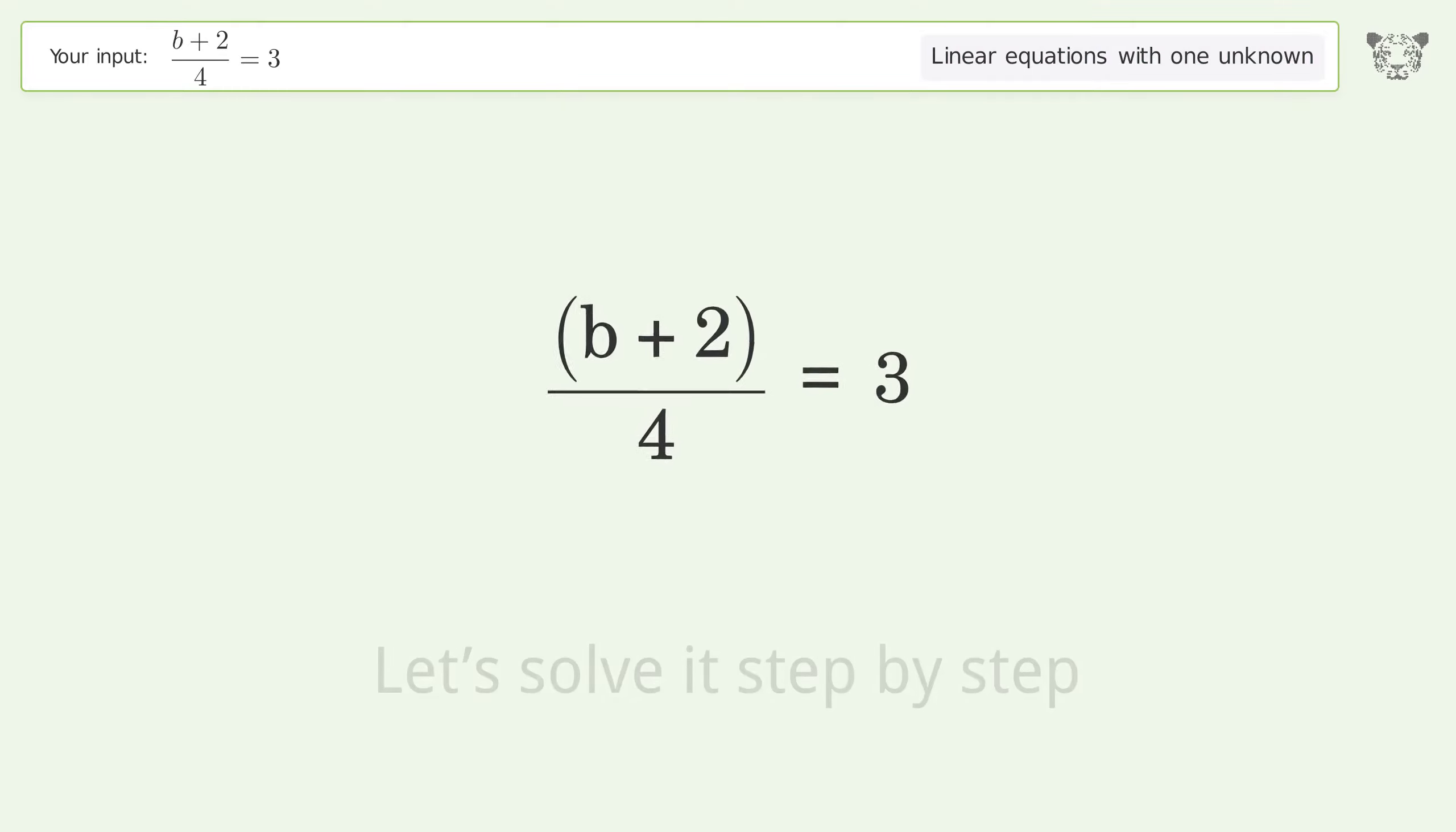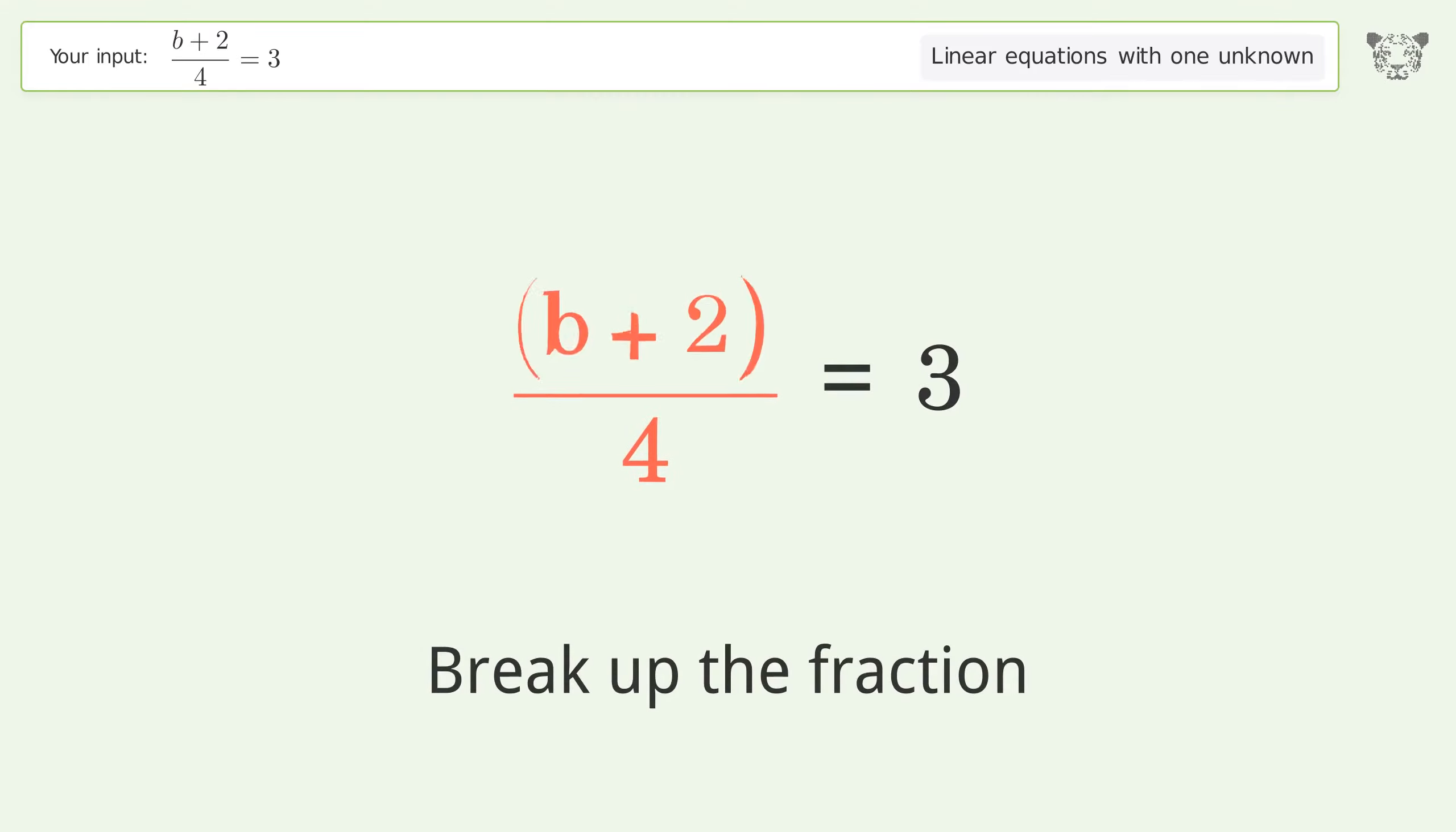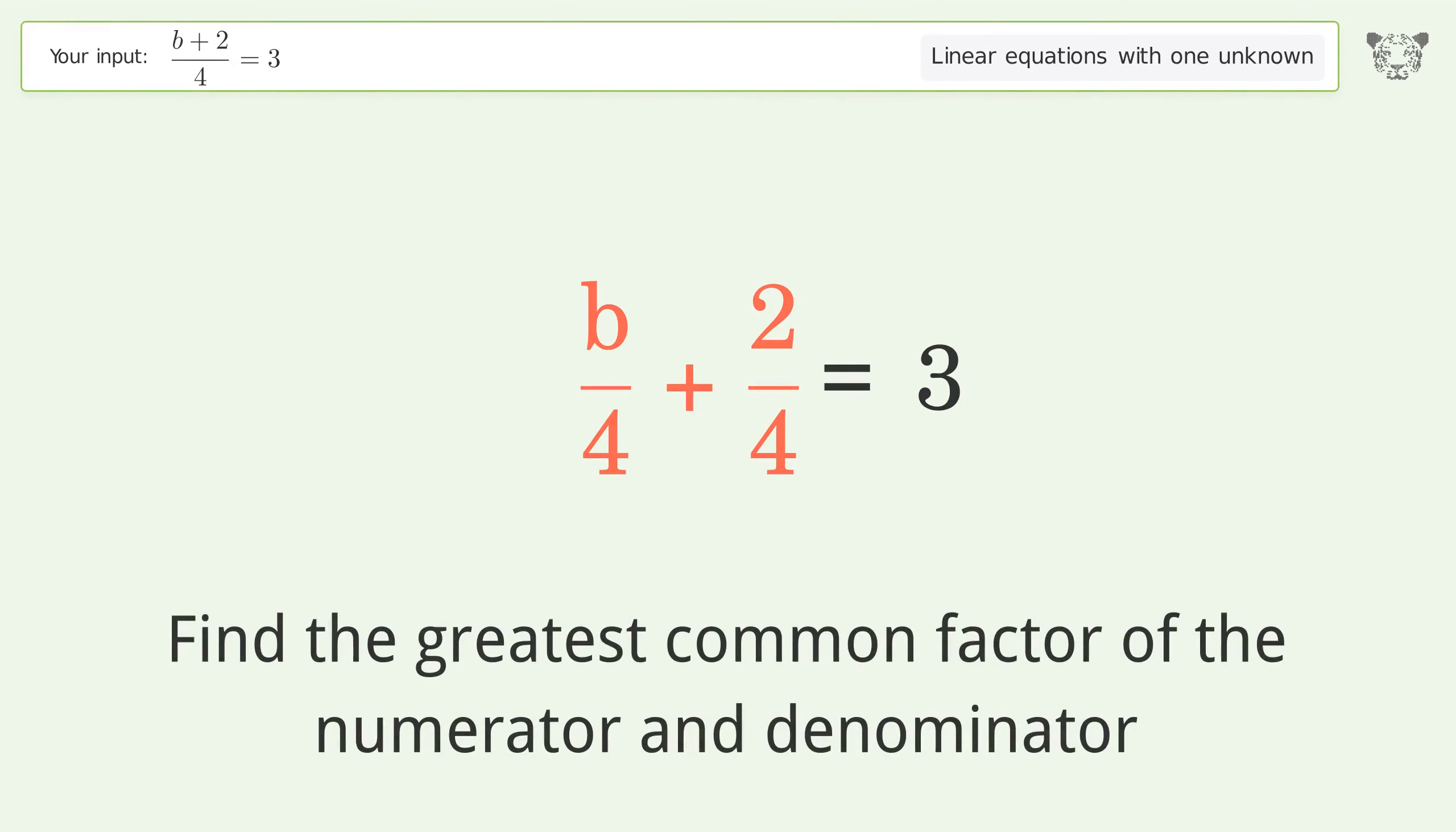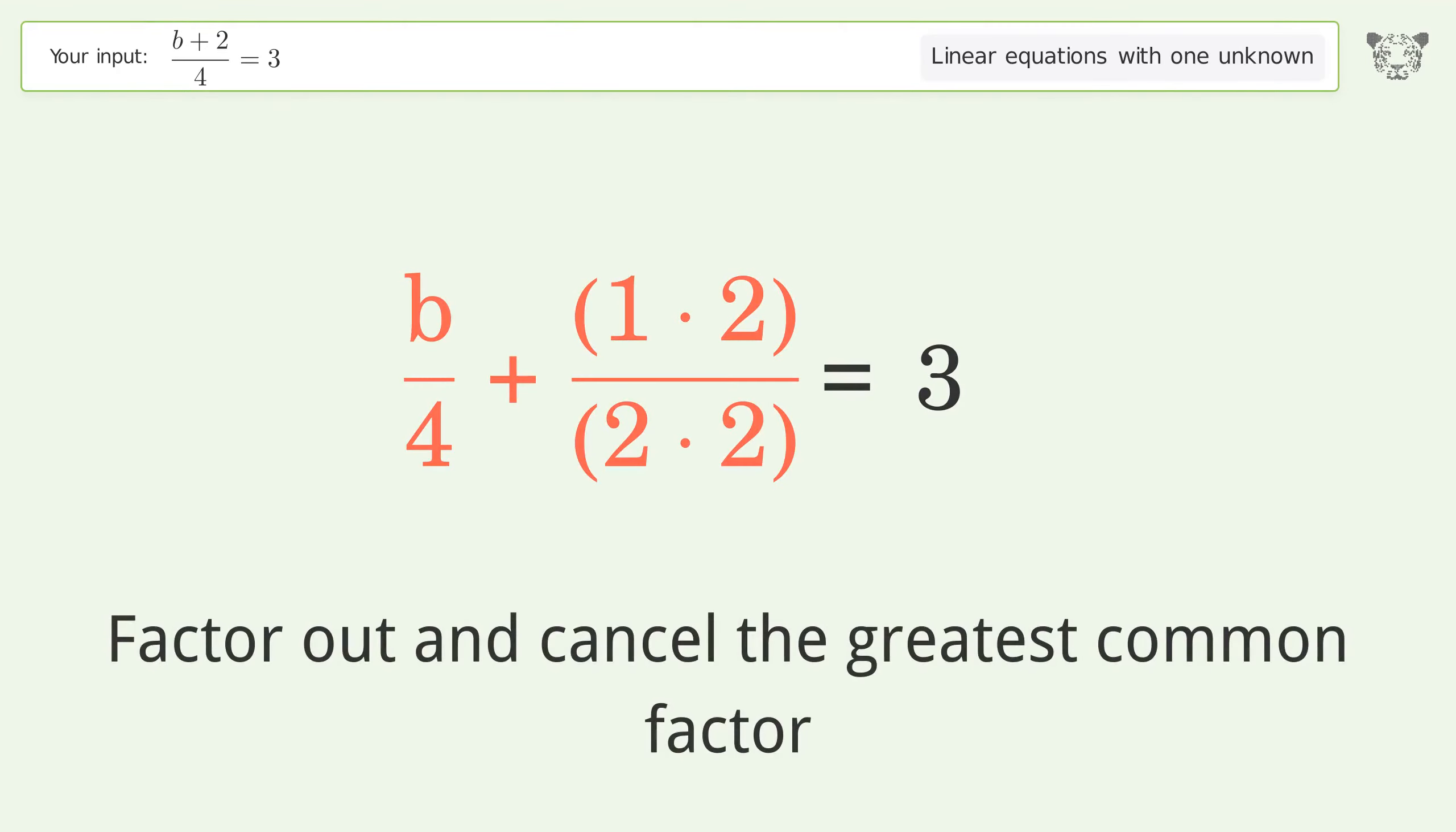Let's solve it step by step. Simplify the expression and break up the fraction. Find the greatest common factor of the numerator and denominator, then factor out and cancel the greatest common factor.